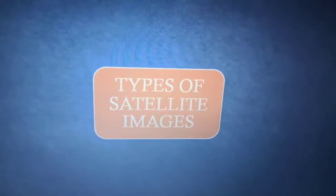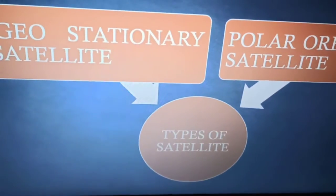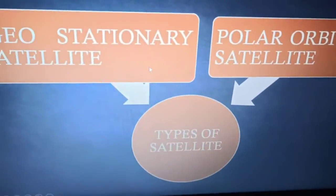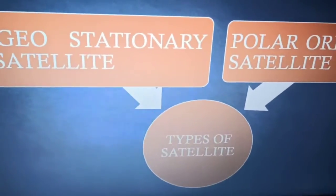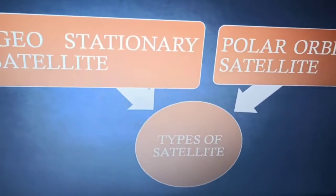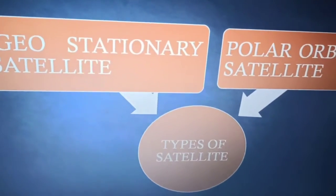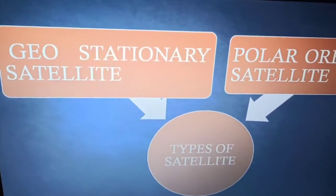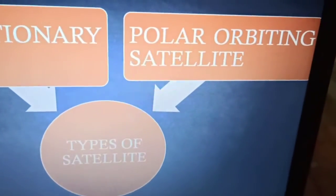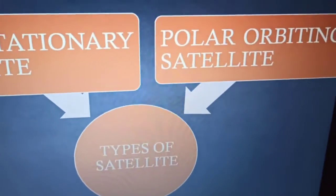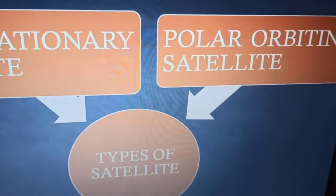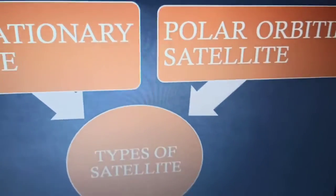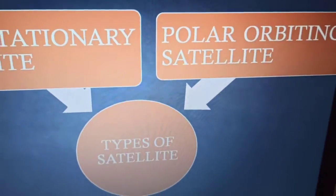There are two types of satellites. One is the geostationary satellite and the other is the polar orbiting satellite. Geostationary satellites orbit the earth from west to east, moving at the same speed as the earth and flying over the equator at an elevation of 22,500 kilometers. Polar orbiting satellites move in the north-to-south direction, present at an elevation of 800 to 900 kilometers, and they capture the earth one strip at a time.